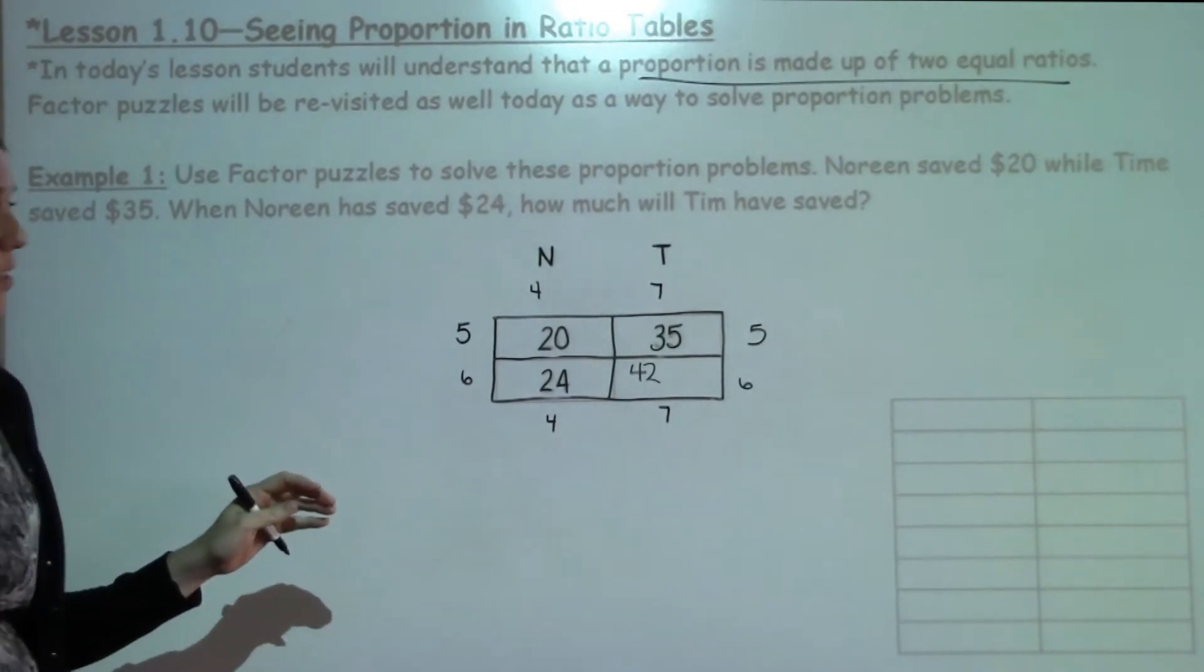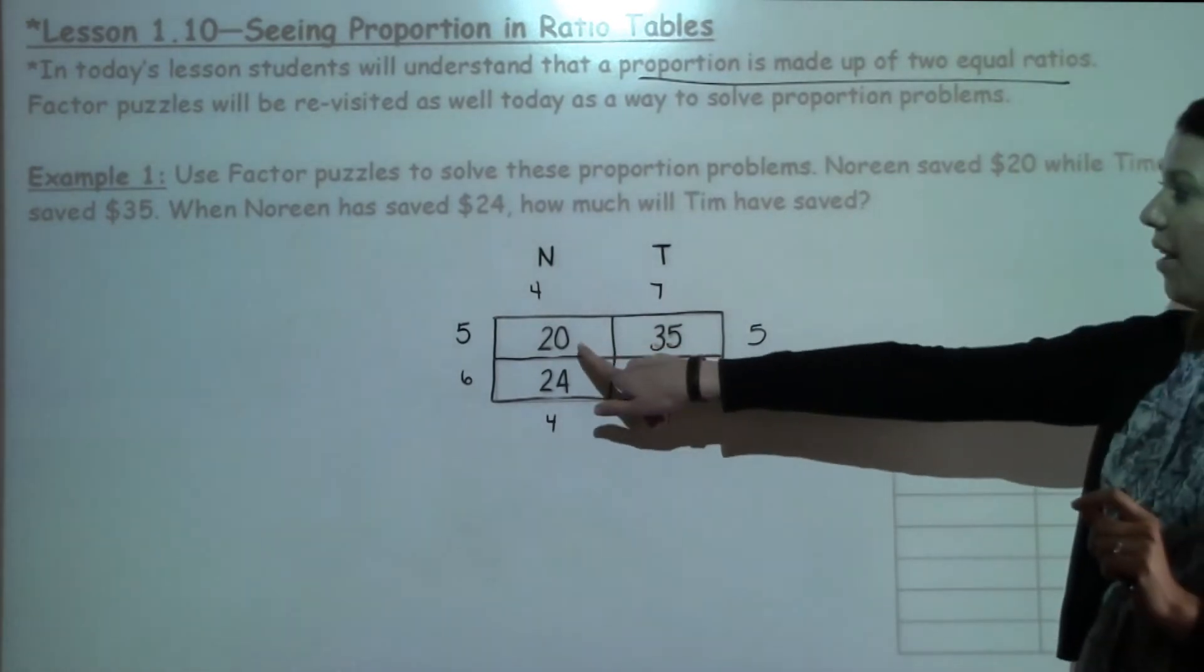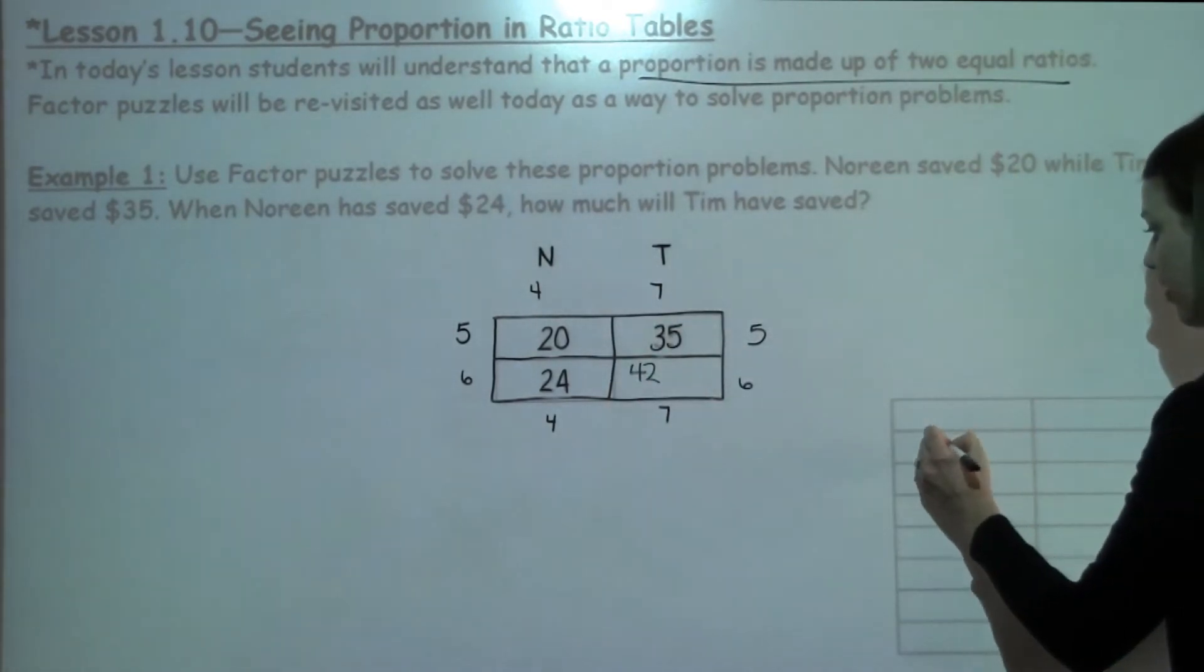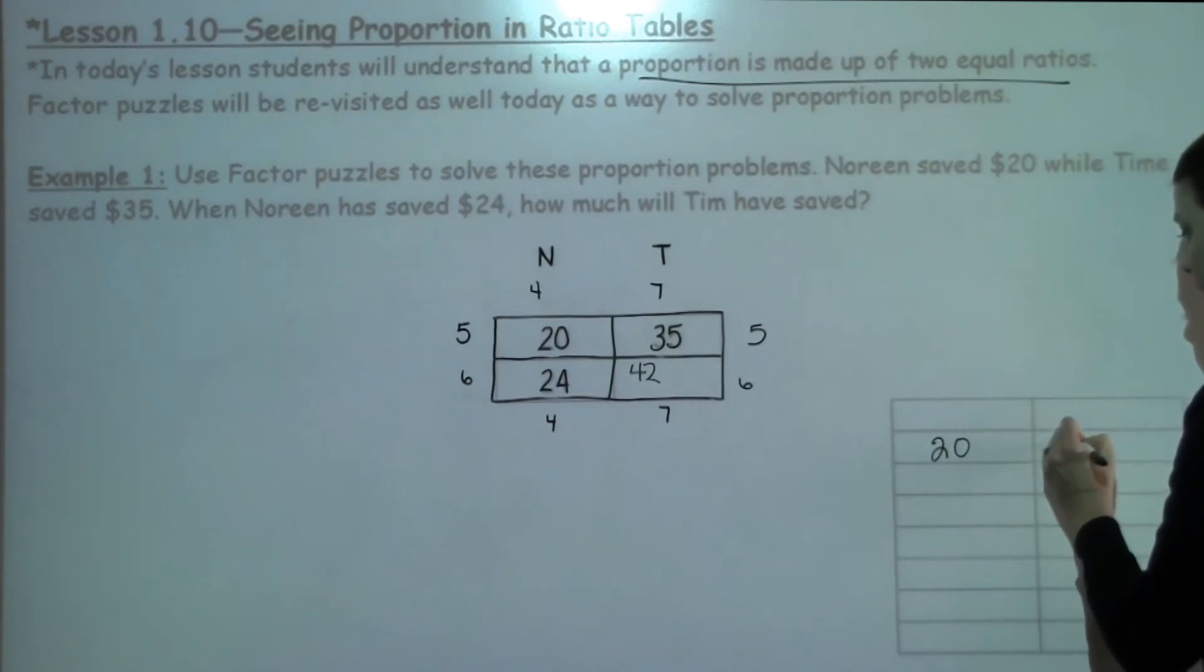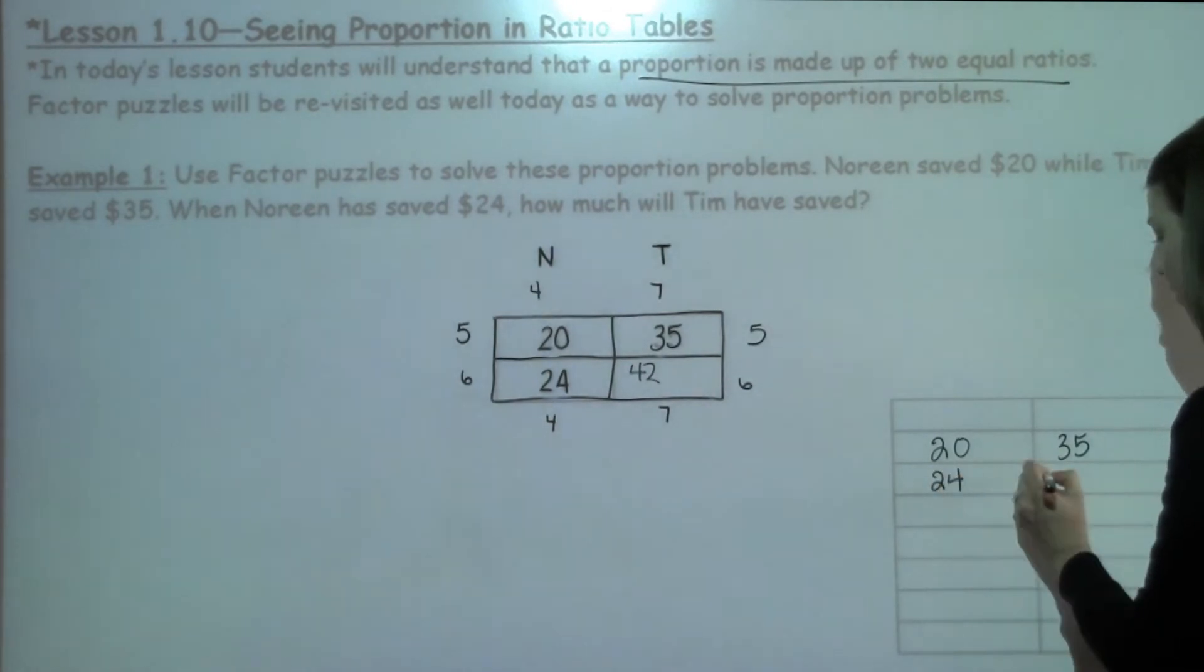Now going over to this table over here, we're going to use this information and put it in here as well. So when we start, I'm going to put my things I already know. My Noreen and Tim have my 20 and their $35. I also know they're going to have $24 and $42.